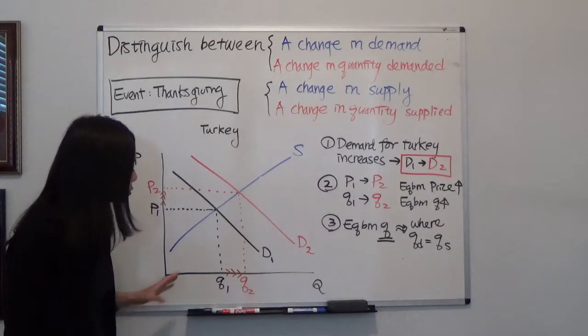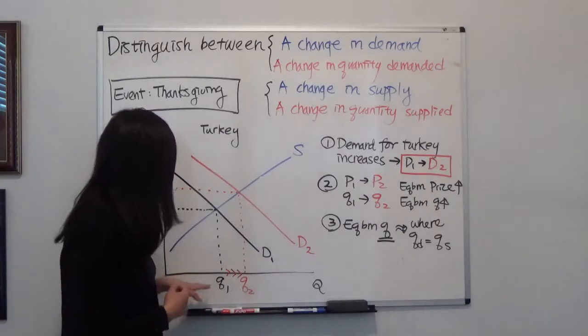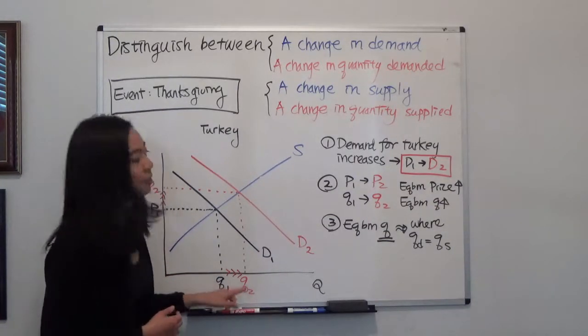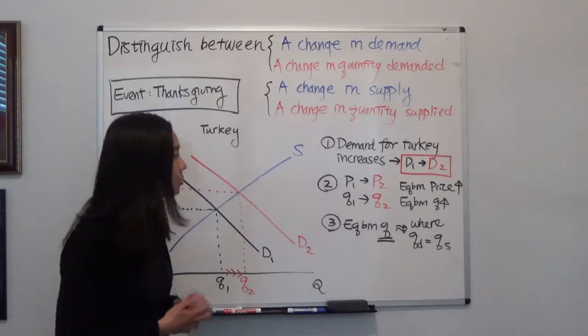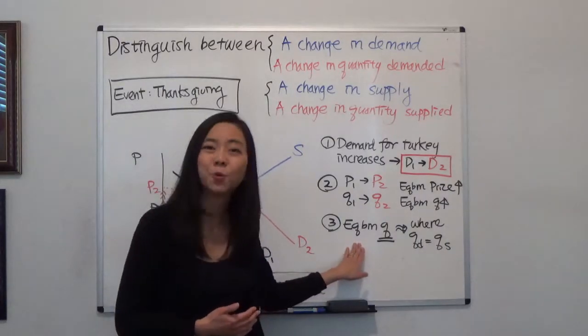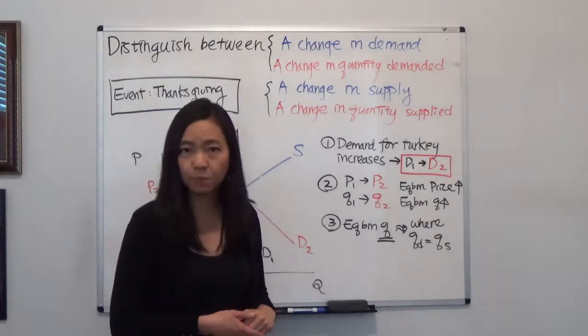And you also have a new equilibrium quantity. So the quantity has gone up from Q1 to Q2. So you know you have a new equilibrium quantity. So what is equilibrium quantity?